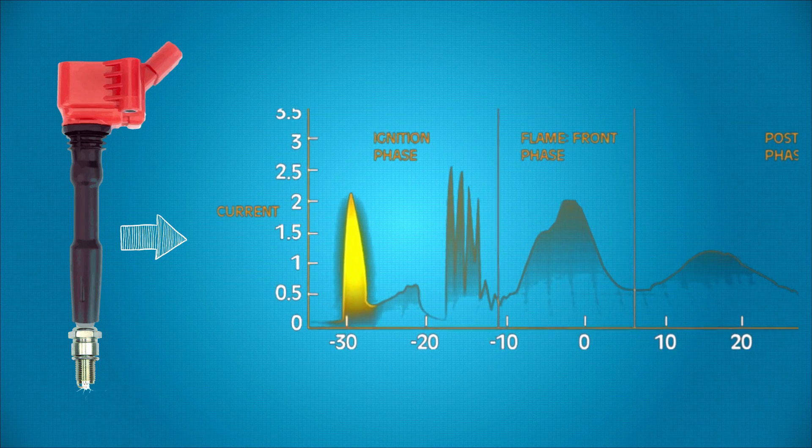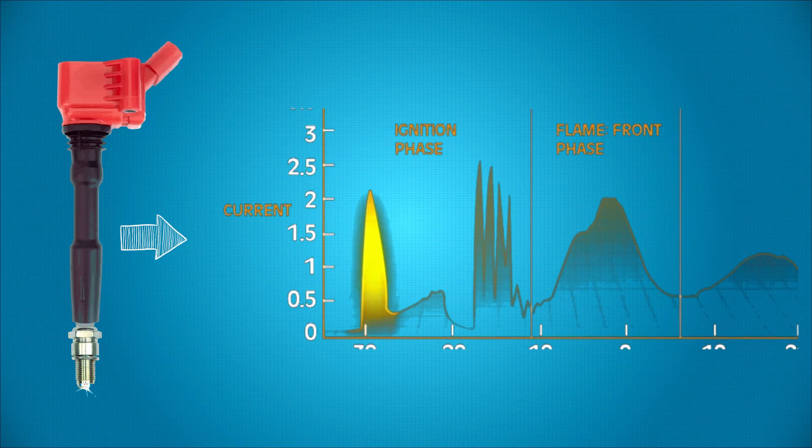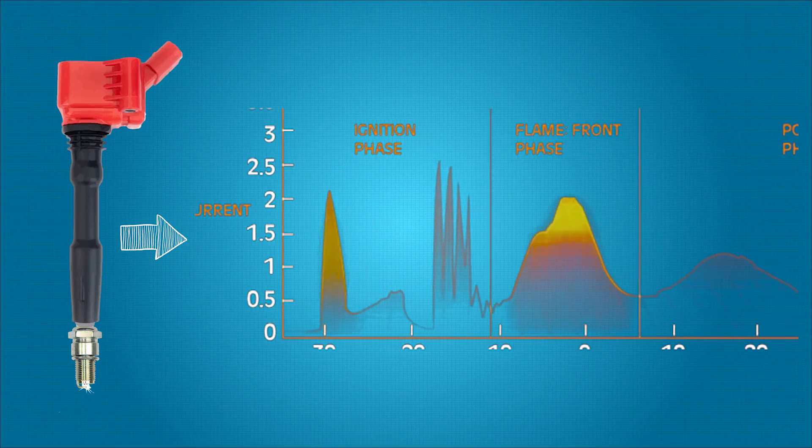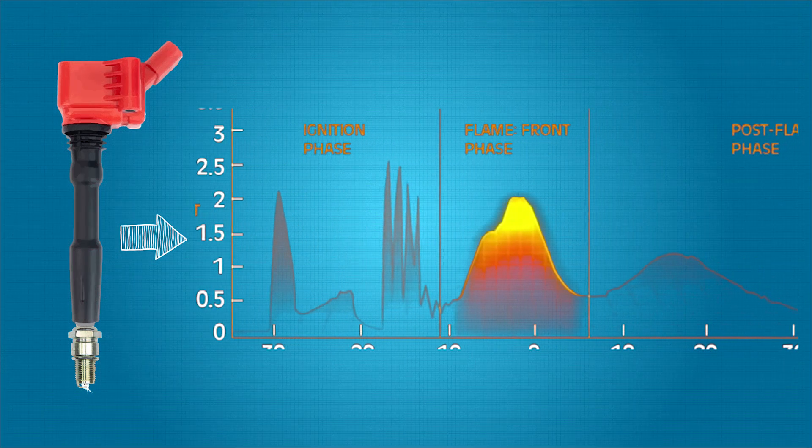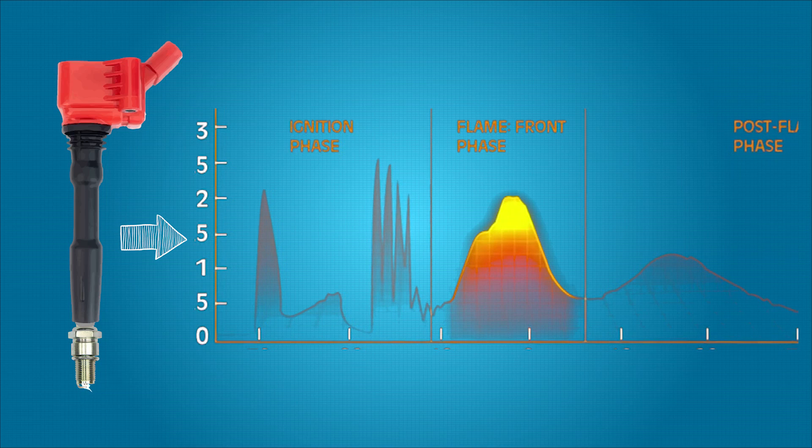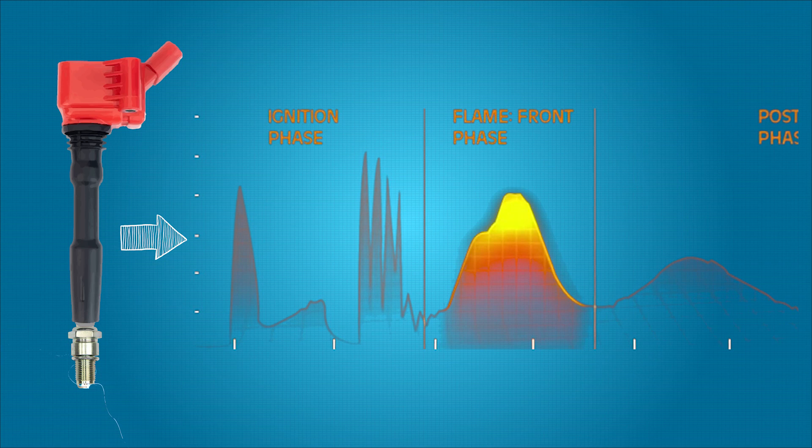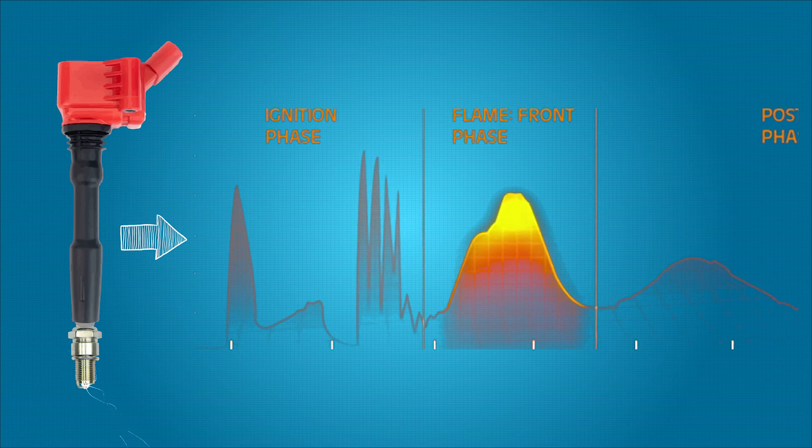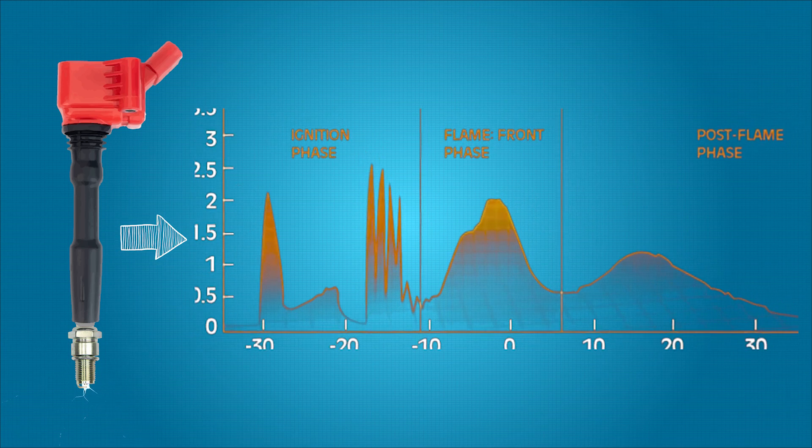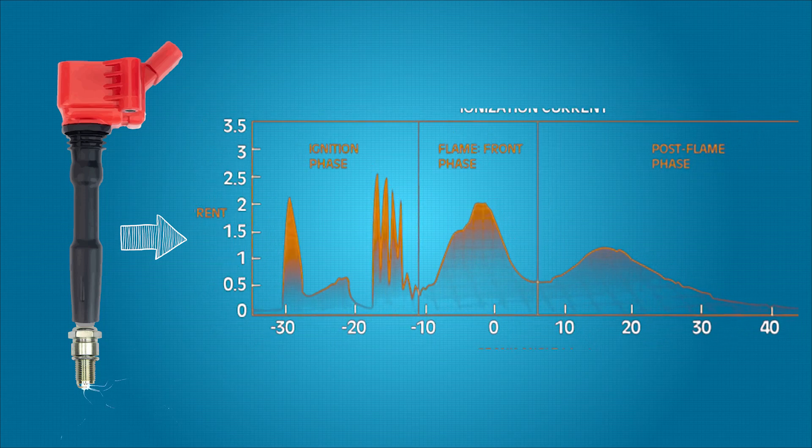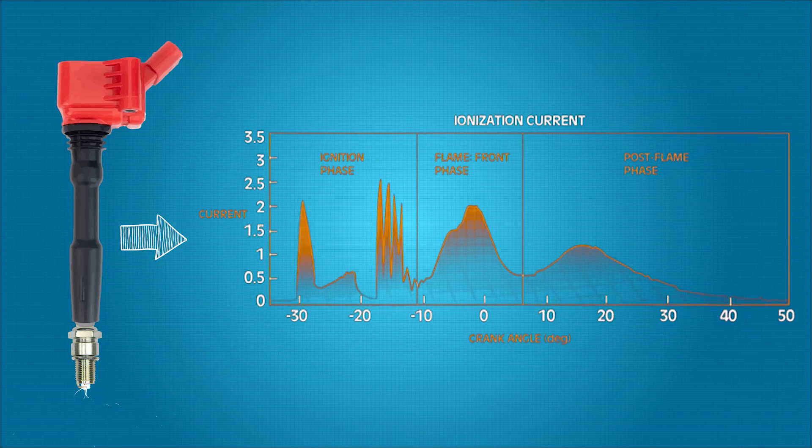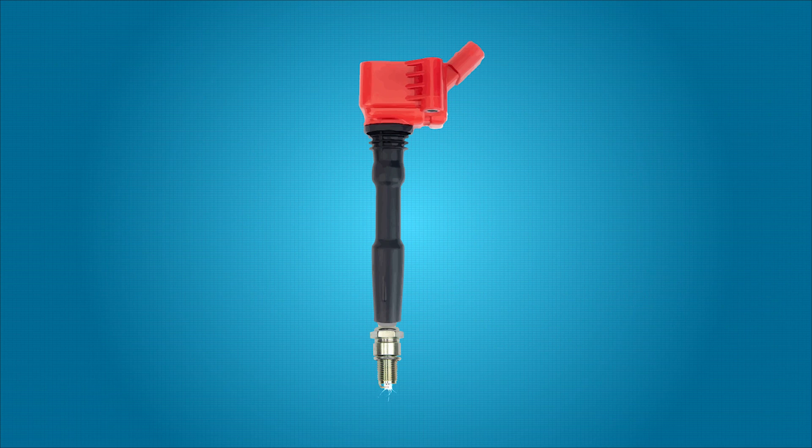Detecting detonation also saw an evolution in the form of ionic sensing ignitions. Because spark plugs are right in the middle of the combustion process, it can be used to monitor the combustion process itself. In ionic detonation sensing, the ECU uses the spark plug as a sensor to sample the ionization of each cylinder after each combustion, to directly detect the signature of even tiny amounts of detonation. This allows the ECU to edge fuel delivery and ignition timing even closer to ideals, making the engine more efficient overall.